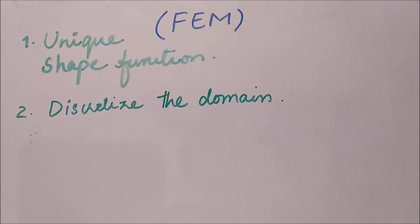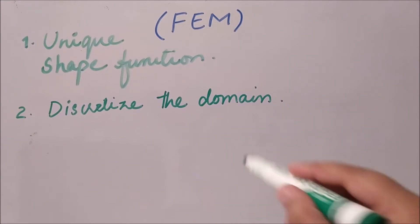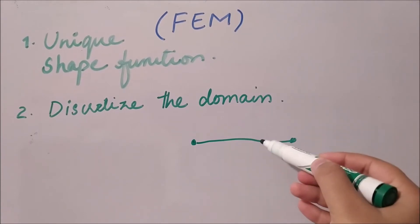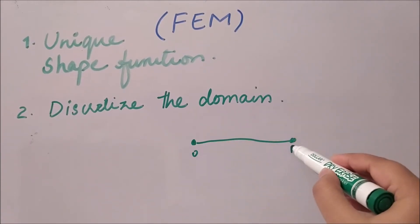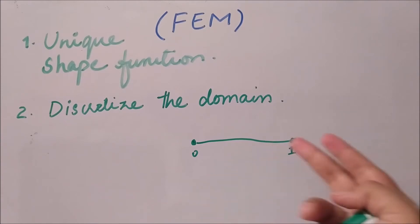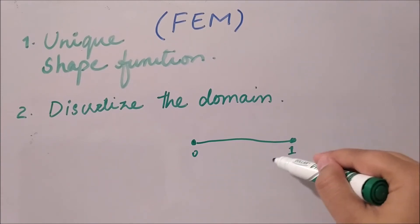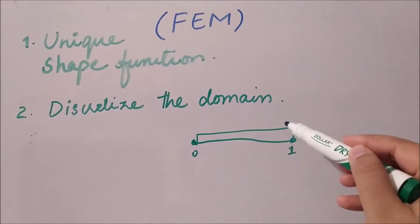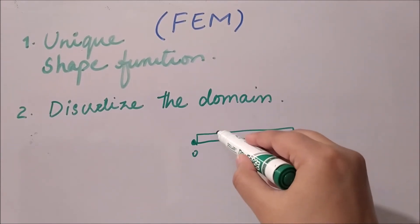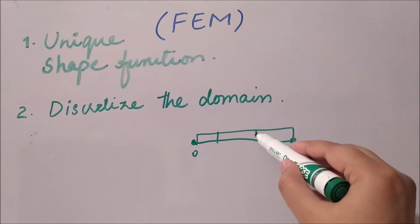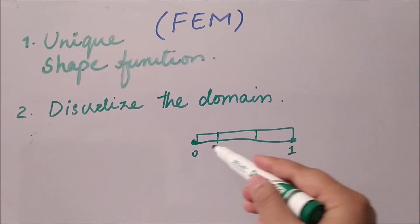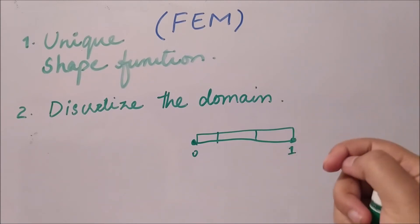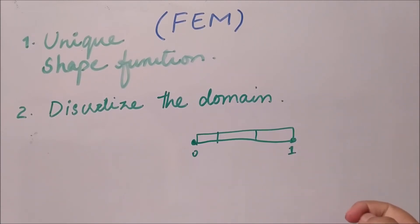The second main point is discretizing the whole domain into more than one element. Initially, in the weak or strong form, we considered the whole domain from zero to one as a single element. But in FEM we are actually discretizing the domain — whatever the object or shape we have — into many elements according to the shape and domain.